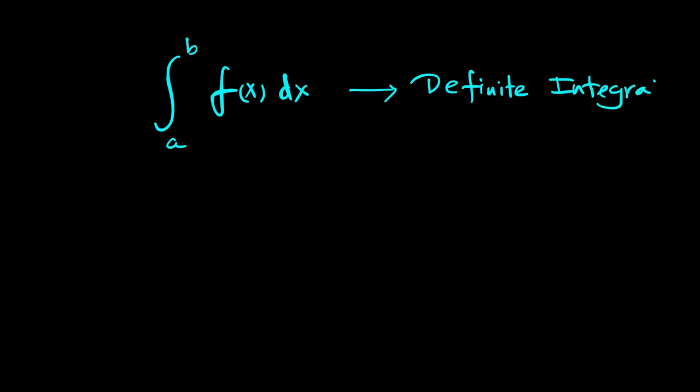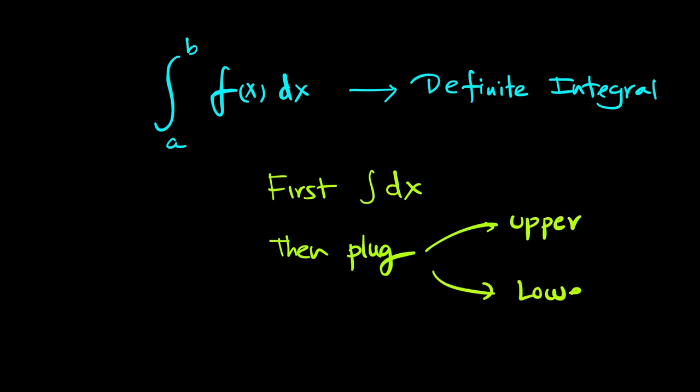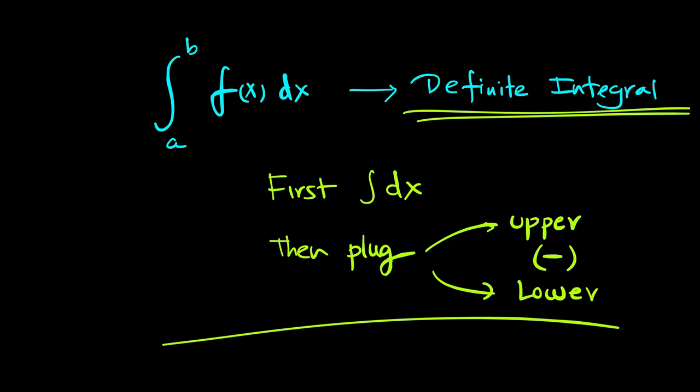What is the rule? The rule is simple. First integrate then plug in. First we plug in the upper limit and then we plug in the lower limit and there is a minus sign between the two expressions. That's how a definite integral is evaluated.